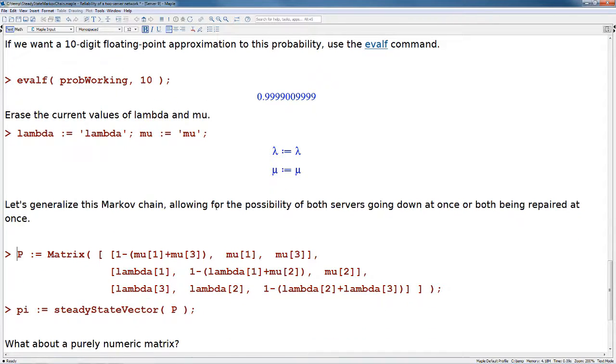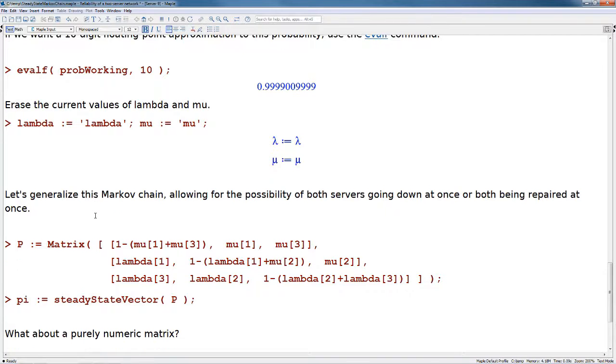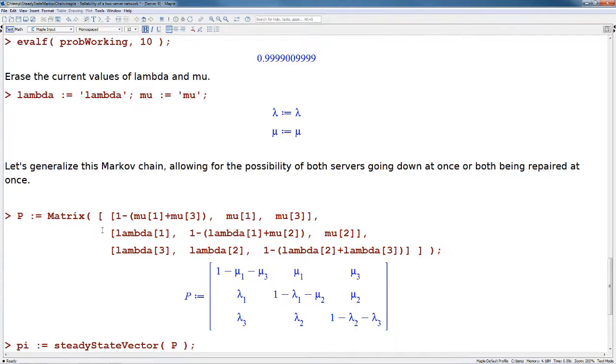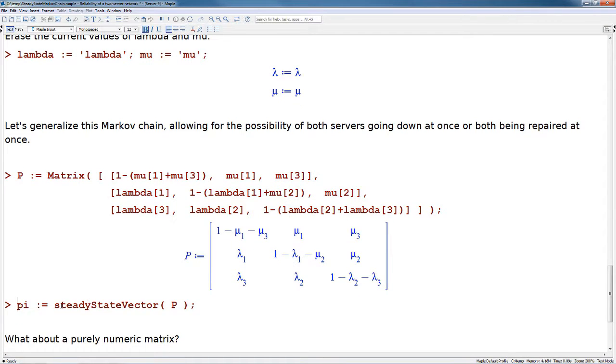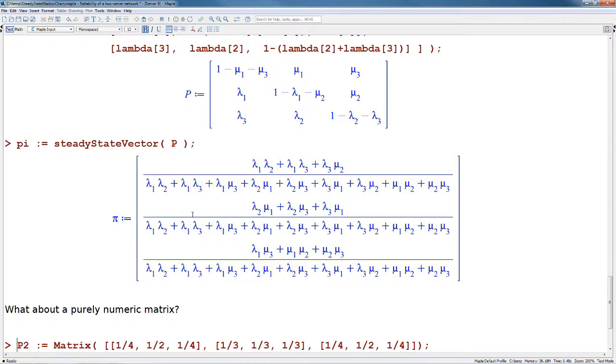Let's generalize this Markov chain allowing for the possibility of both servers going down at once or both being repaired at once. This is a slightly more complex formulation than we saw before. Let's use our steadyStateVector procedure on P. As we can see here, here is the larger result.